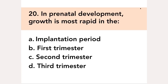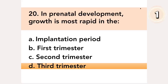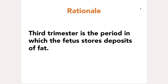In prenatal development, growth is most rapid in the: A. Implantation period, B. First trimester, C. Second trimester, D. Third trimester. Answer: D. Third trimester. The third trimester is the period in which the fetus stores deposits of fat.